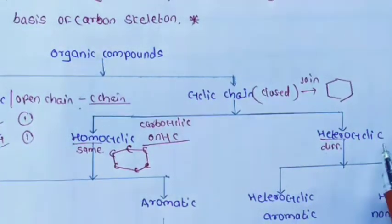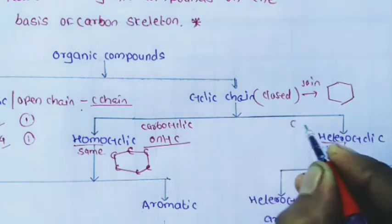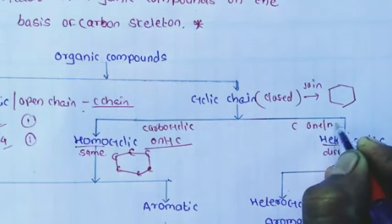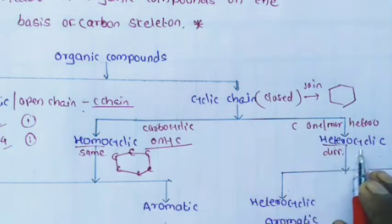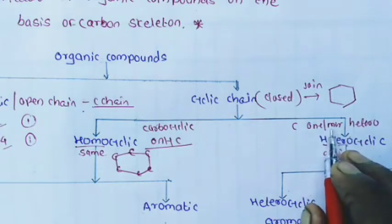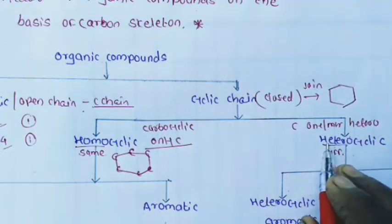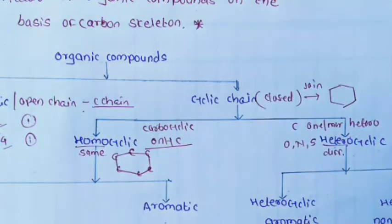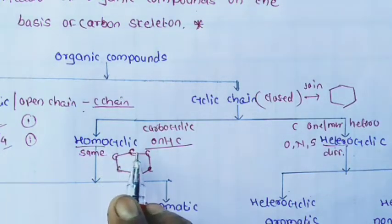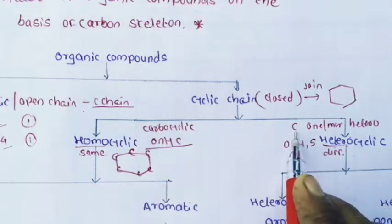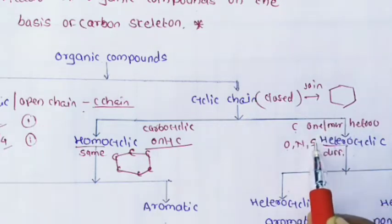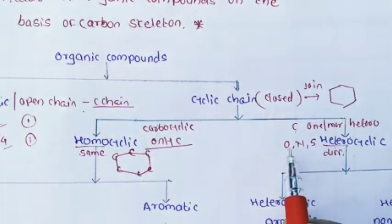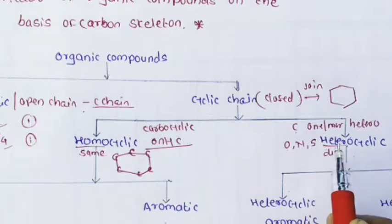A heterocyclic compound means the ring is made up of carbon as well as one or more hetero atoms. This ring includes one or more hetero atoms such as oxygen, nitrogen, or sulfur. It is called a heterocyclic compound.